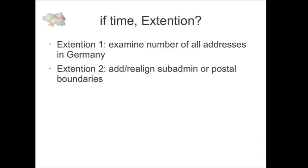I have two or three more minutes, and I have two extensions in the slideshow. One is that I made a try to examine how many addresses we have in Germany, because we don't have this number anywhere. I found nearly 19.3 million addresses. I expected a little bit more - around 22 to 24 million - but with this method and this kind of analysis I found 19.3 million.